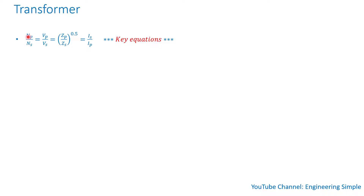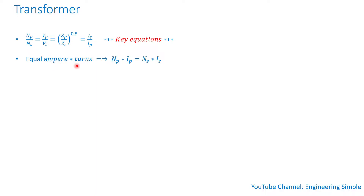Notice a pattern: primary, primary, primary — but for current it's secondary divided by primary. One concept we can derive from this equation is equal ampere-turns. Ampere-turns means current times turns, so the number of turns in the primary times the current in the primary is equal to the number of turns in the secondary times the secondary current.